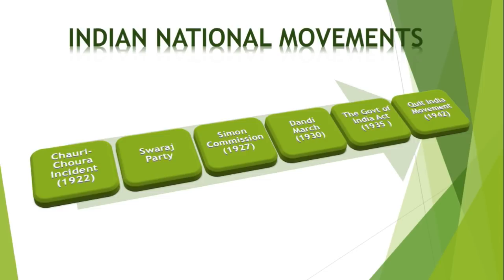Next is the Simon Commission, 1927. Under the 1919 Act, a commission was to be appointed by the British government at the end of 10 years — that is 1929 — to inquire into the working of the system of government in the country and make recommendations for reforms. However, the commission was actually appointed two years earlier, in 1927. The commission consisted of seven members of the British Parliament and was headed by Sir John Simon.